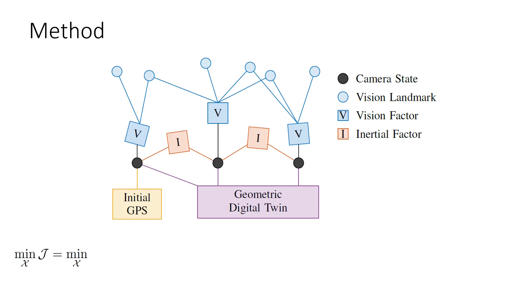The cost function to minimize includes visual, inertial, map registration, and marginalization residuals.